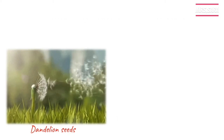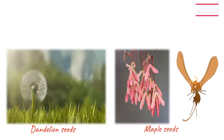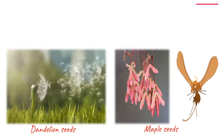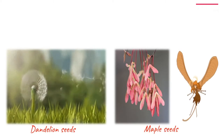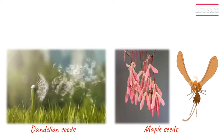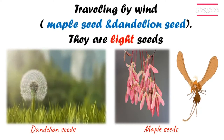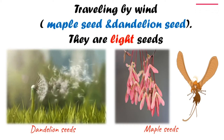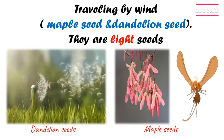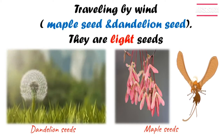We can see this plant in green lands. This is called dandelion seeds. And you can see that these seeds look like a fairy. This fairy plant is called maple seeds. So the second way of seed dispersal is traveling by wind. Why do they travel by wind? Because they are light seeds. Our examples are dandelion seeds and maple seeds.